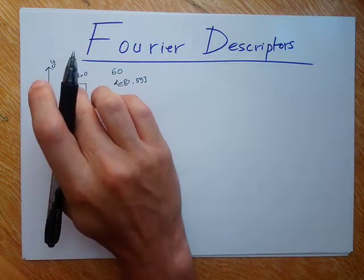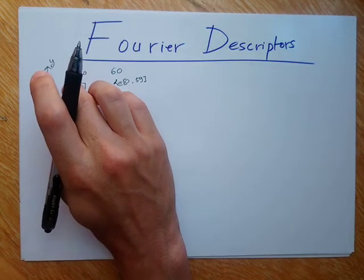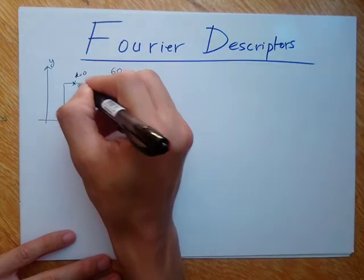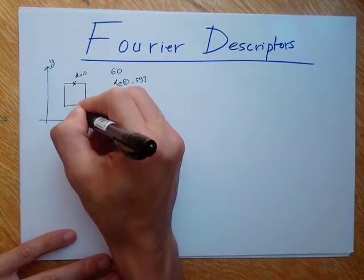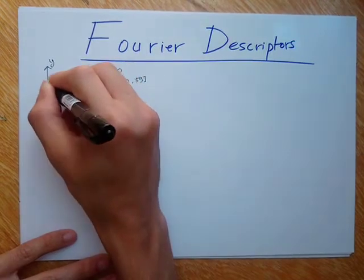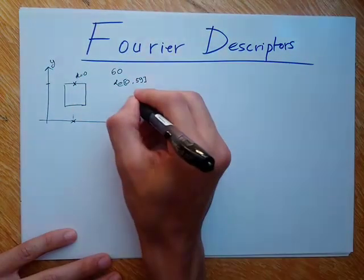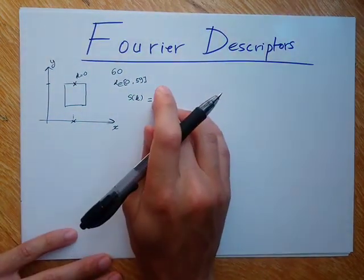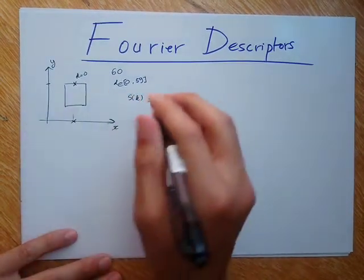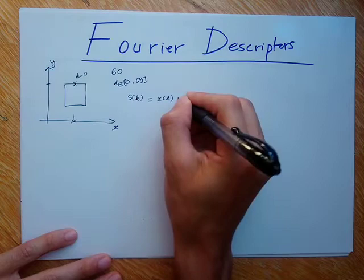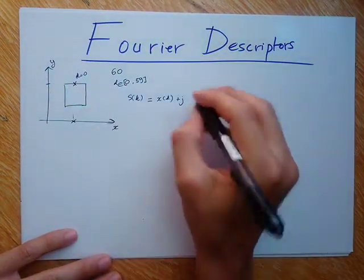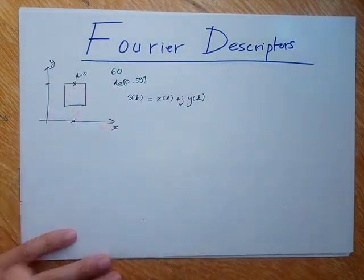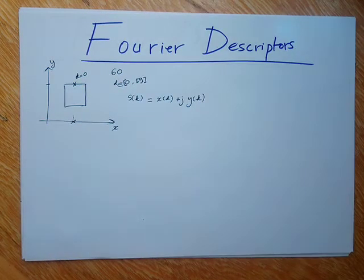For each edge pixel, I consider its coordinates as a complex number. So this edge pixel has a real part which is x, and an imaginary part which is y. A given edge pixel is represented as a complex number where the real part is its associated x coordinate and the imaginary part is its associated y coordinate. I do that for all the edge pixels in my shape.